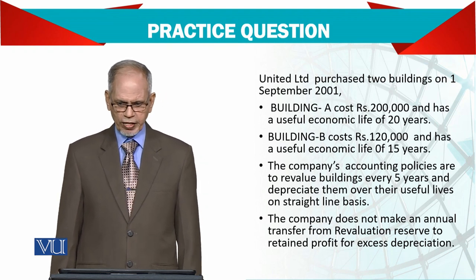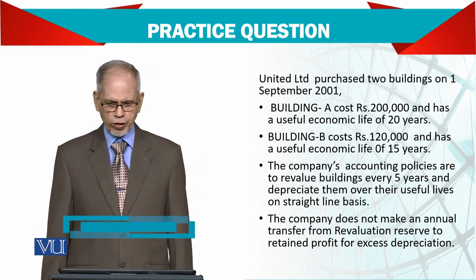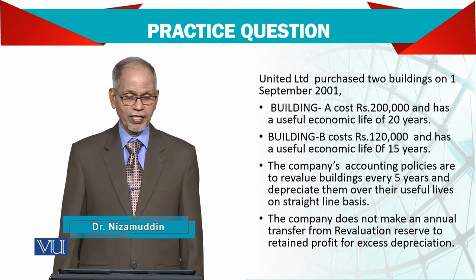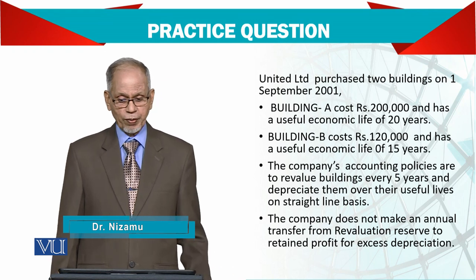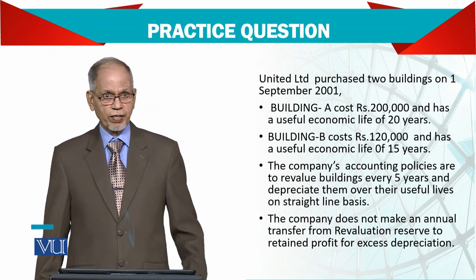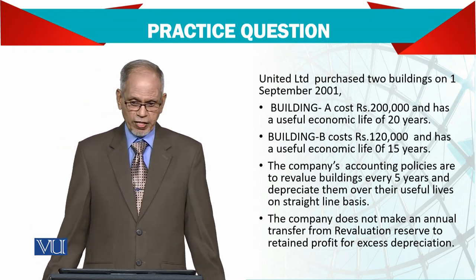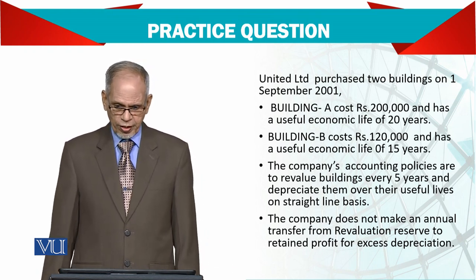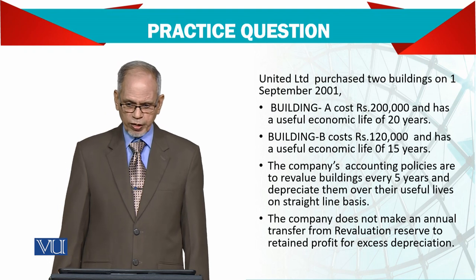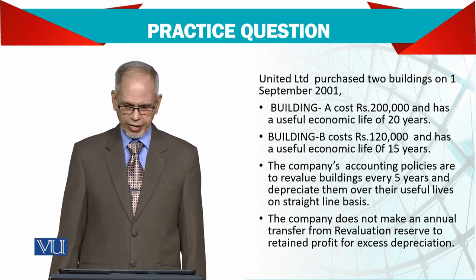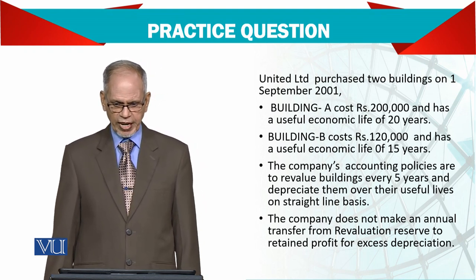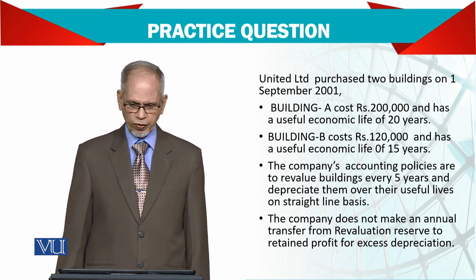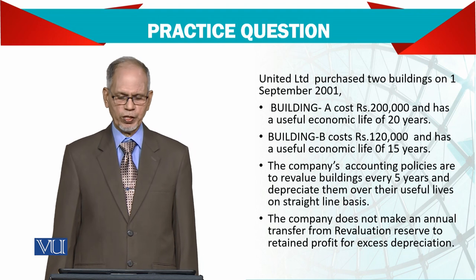The company's accounting policy is to revalue the buildings every five years — not every year like investment property, but after five years. So we have to follow that policy and depreciate them over their useful life on a straight-line basis. The company does not make any annual transfer from revaluation reserve to retained profits for excess depreciation.